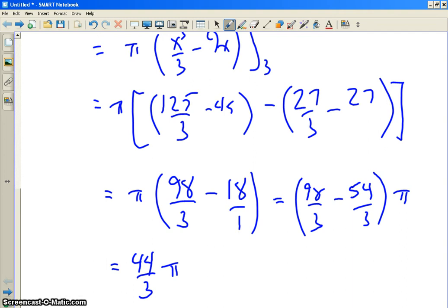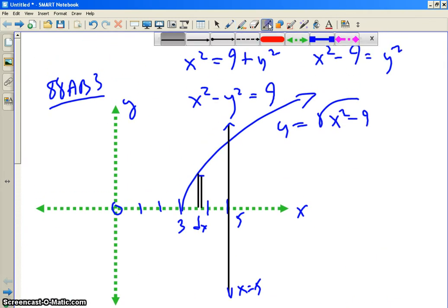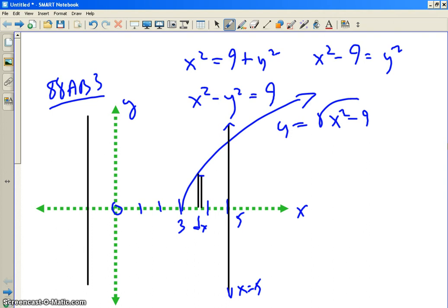All right, part B. Now, set up, but do not integrate, an integral expression in terms of a single variable for the volume of the solid generated when R is revolved about the line x equals negative 1. All right, now, there's two new things going on here. X equals negative 1 is the axis of rotation. Not one of the axes, x-axis or y-axis. That's new. Also, if you're doing vertical strips, the strip is parallel to the axis of rotation. That's different also. So, you could, but you don't have to. Right, that's why I'm going to show you something new.